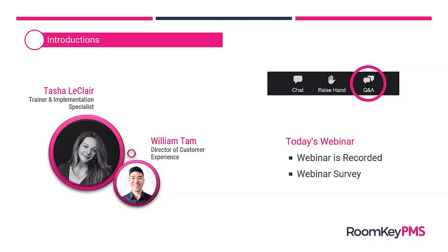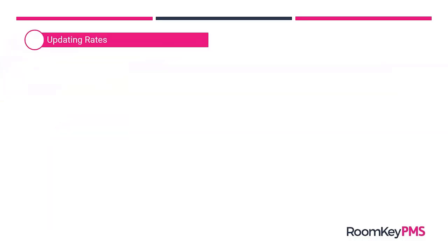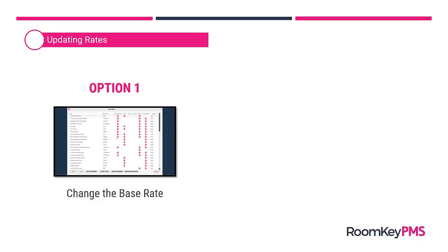Starting with our topic today, we'll look at how to update rates. We actually have a couple of options in Roomkey for how to update rates. This will not be demonstrating how to create a brand new rate — we do have a webinar presentation on our support website that shows you how to create a brand new rate, upload rates, and attach client types. These options are going to show you how to change rate pricing. Our recommended option is to change the base rate.